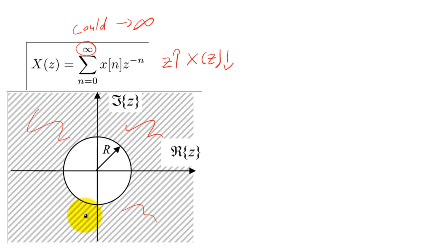Since Z will need to be large, as we just discussed, the transform will converge only for values of Z greater than some value r. We call the values of Z greater than r the region of convergence.